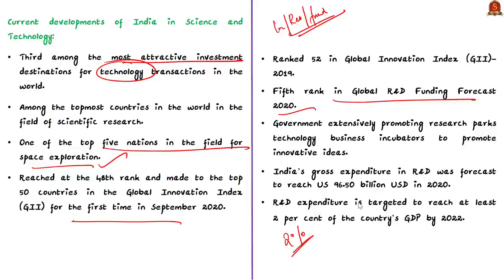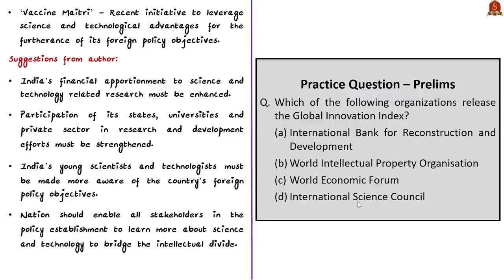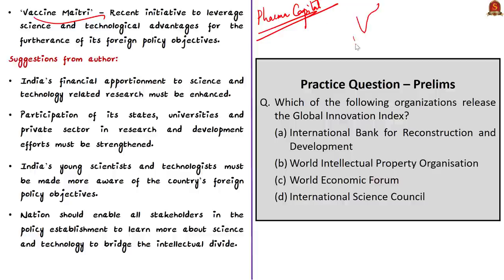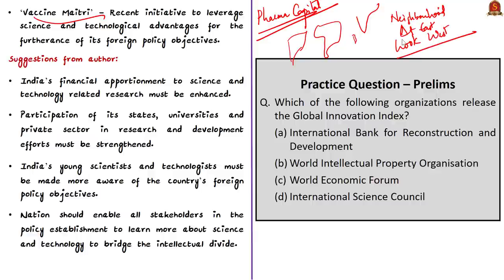The author talks about the ongoing Vaccine Maitri campaign, in which India is providing COVID-19 vaccines to countries around the world. Being known as the Pharma capital of the world, this is one of the most important recent initiatives to leverage science and technology advantages to benefit foreign policy objectives. Many small countries like Maldives, South African countries, and even Latin American countries have applauded India's support. India's COVID-19 response also closely aligned with its Neighborhood First, Act East, Indo-Pacific, and Look-West policies, so even vaccine delivery was made according to foreign policy objectives.